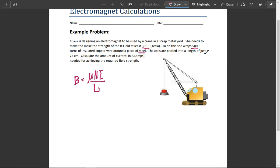She wraps 5,000 turns of insulated copper around a piece of steel. The coils are packed into a length of just 75 centimeters. Calculate the amount of current in amps needed to achieve this required field strength. So we start off with our equation here.